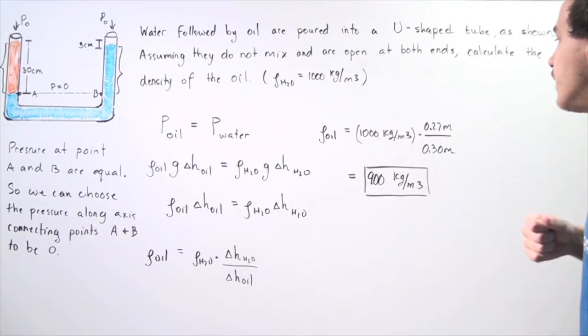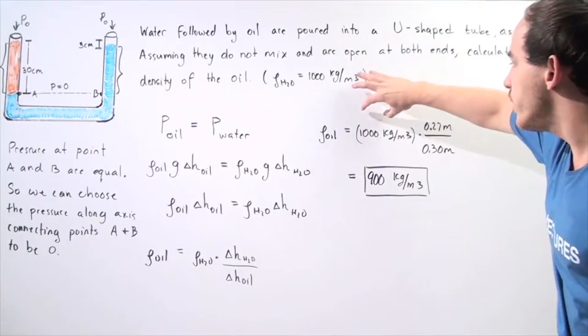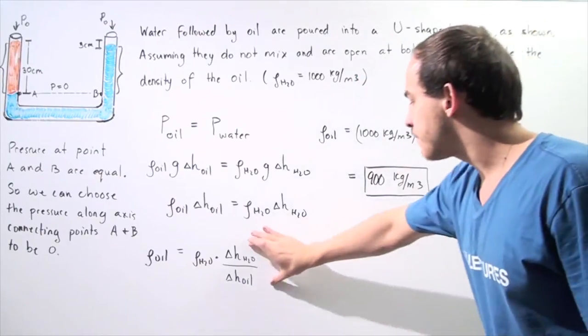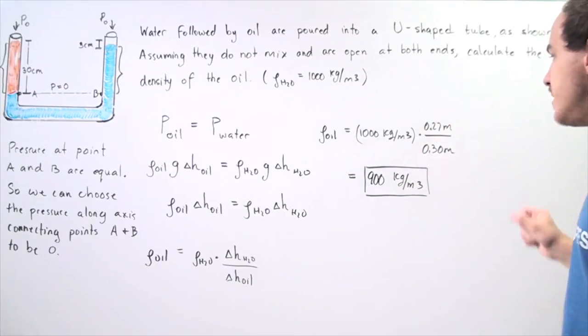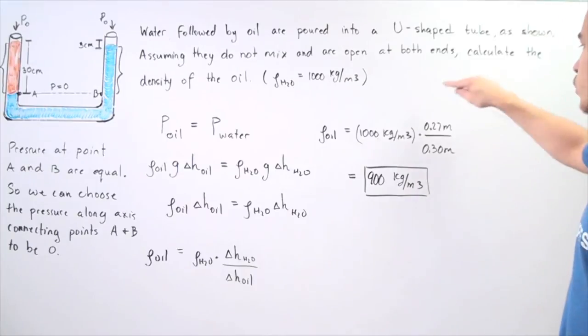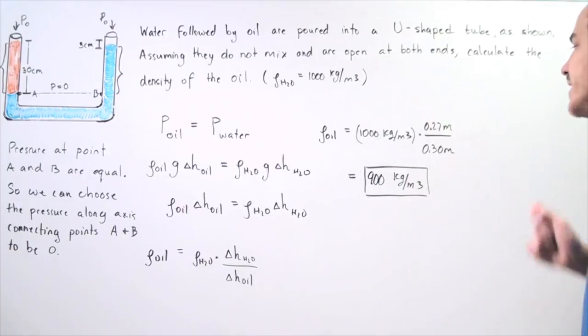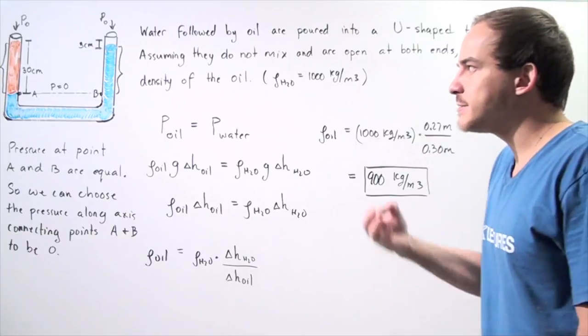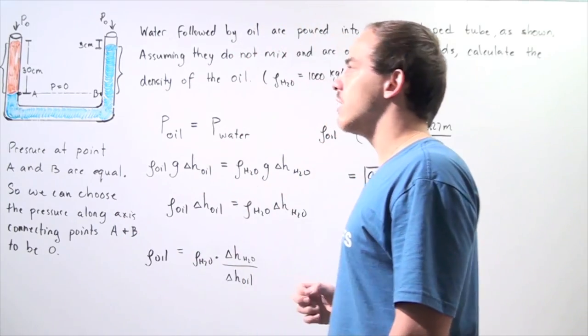So let's actually solve for our density. The density of oil is equal to the density of water, 1000 kilograms per meter cubed, multiplied by our fraction. So 0.27 meters divided by 0.3 meters, this fraction becomes 27 divided by 30 multiplied by 1000, and we get 900 kilograms per meter cubed is the density of oil, which makes sense because the density of oil should be less than the density of water.